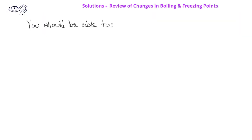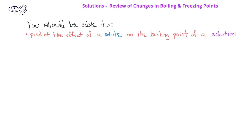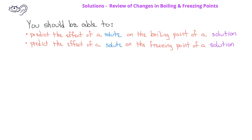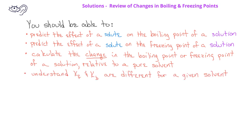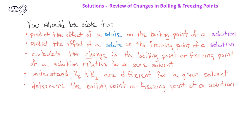By now, you should be able to predict the effect a solute would have on the boiling point of a solution, as well as the freezing point of a solution. You should be able to calculate the change in the freezing point or the change in the boiling point for a solution, and understand the difference between the K sub b and K sub f values. Finally, you should be able to determine the new freezing point or the new boiling point for a solution.